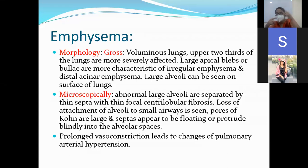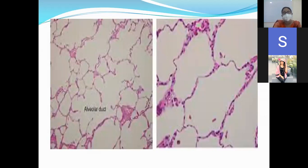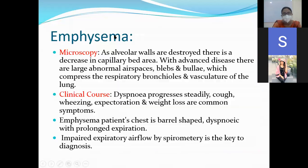The airspace is enlarged and lined by a thin wall. The pores of Kohn in a normal lung are responsible for communication between two alveoli. When the alveoli are enlarged and the wall becomes thin, the pores of Kohn appear to float or protrude into the alveolar spaces. In the microscopic image, the alveolar spaces are large and enlarged, lined by thin septa. As alveolar walls are destroyed, there is a decrease in the capillary bed area.